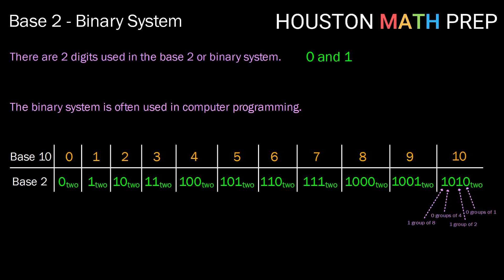One thing to notice about the binary system is that each place value represents a power of 2. By the time we get to 10 in base 10, we're already in the 4th place value of base 2. So the numbers get very large very quickly in the binary system.